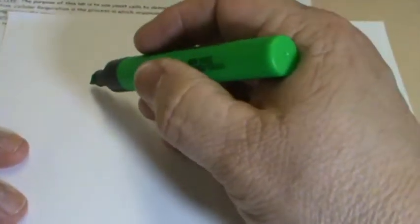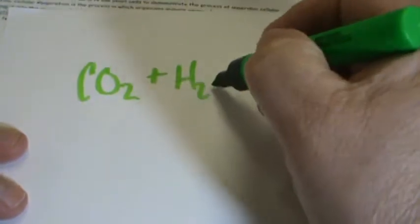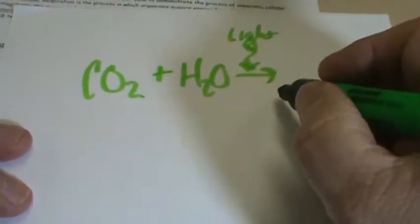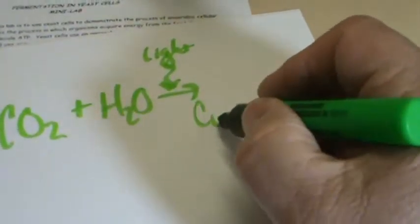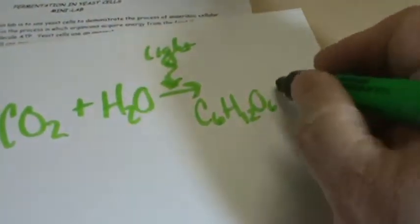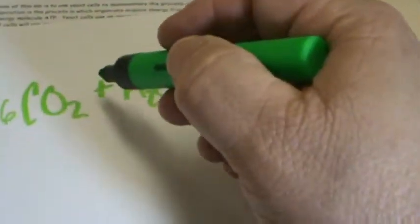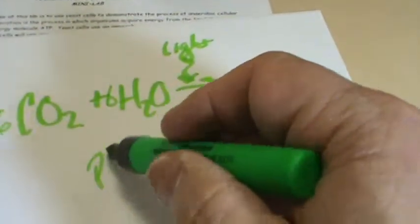In photosynthesis, we're taking carbon dioxide — CO2 — plus water — H2O — and in the presence of light, we're going to get a sugar molecule. Our basic sugar is C6H12O6, and we're going to get oxygen. Generally speaking, this is six carbon dioxides and six waters, giving us that molecule and six oxygens. This is photosynthesis.